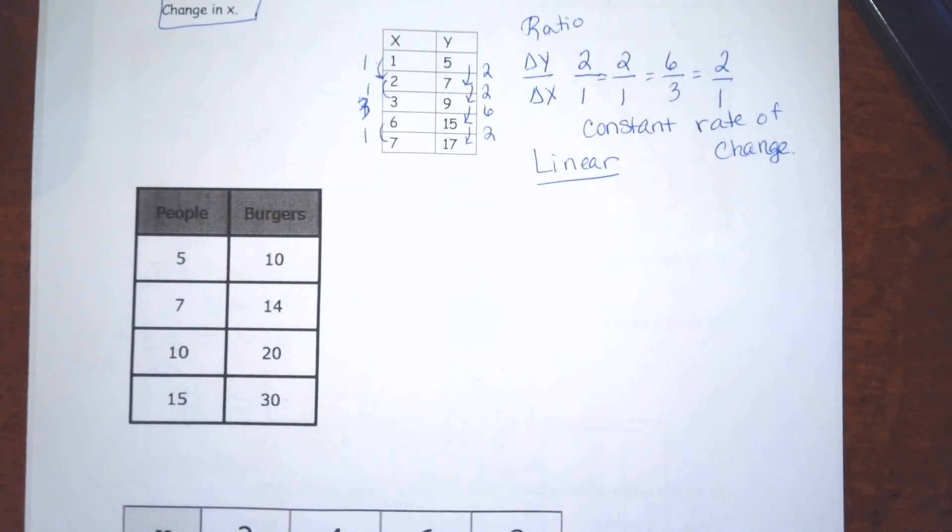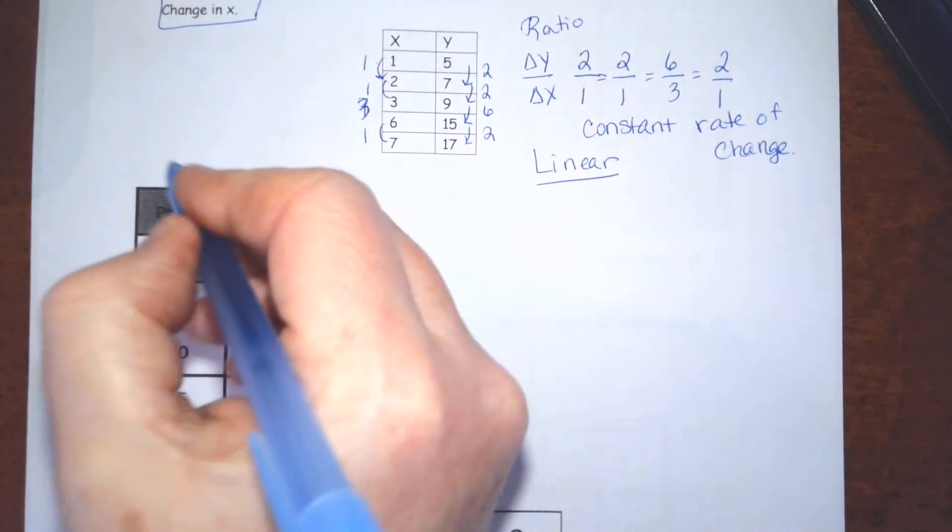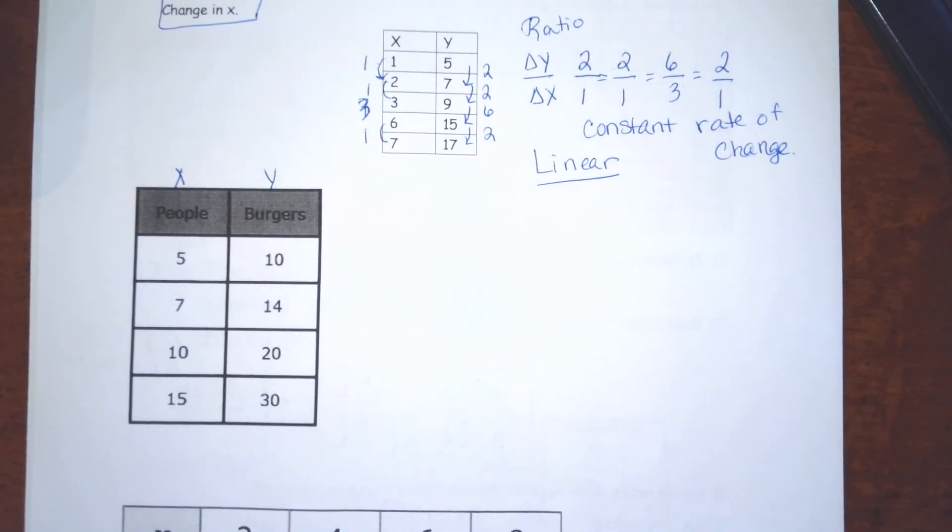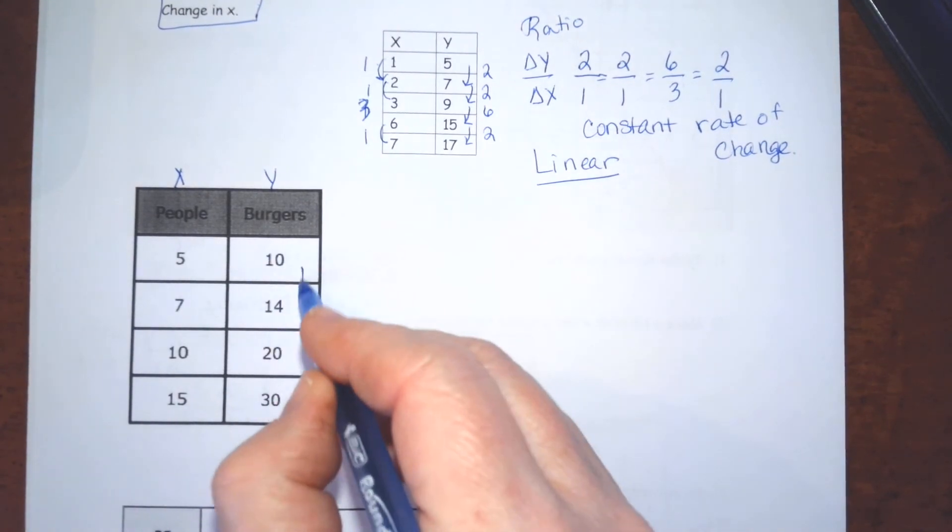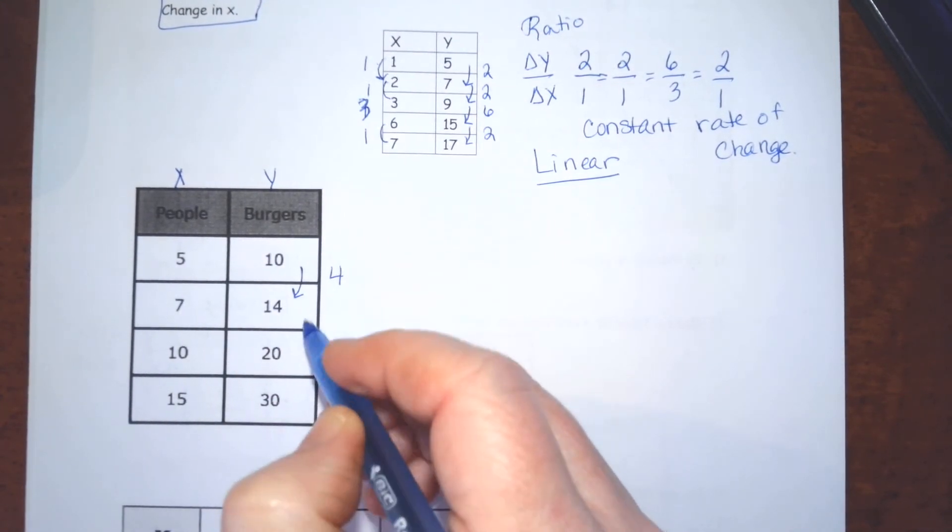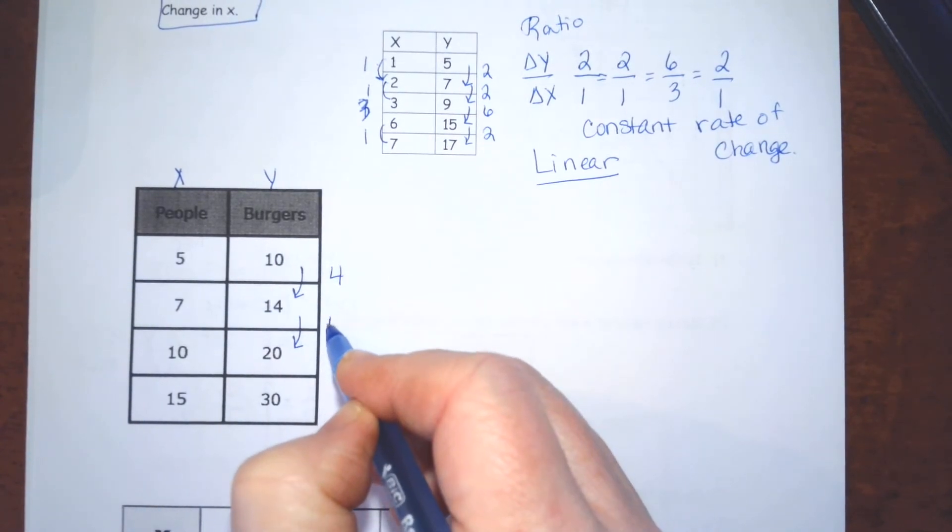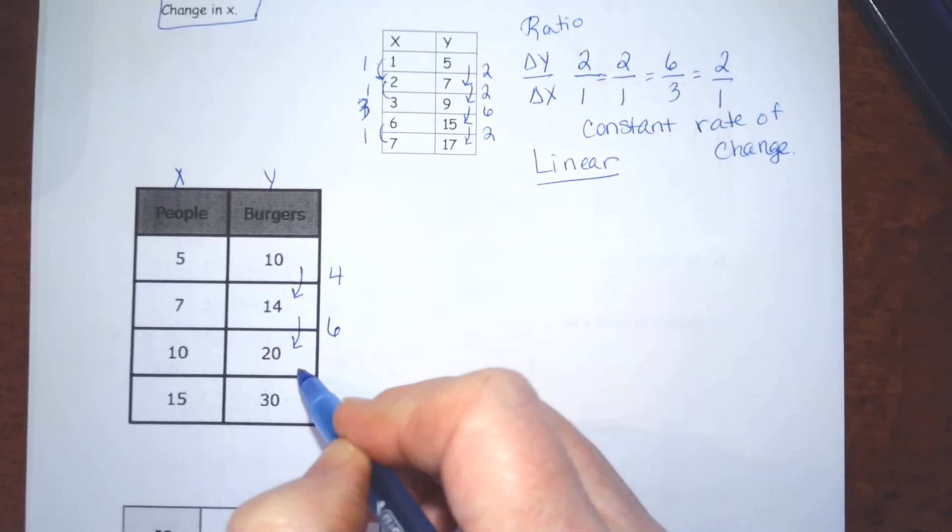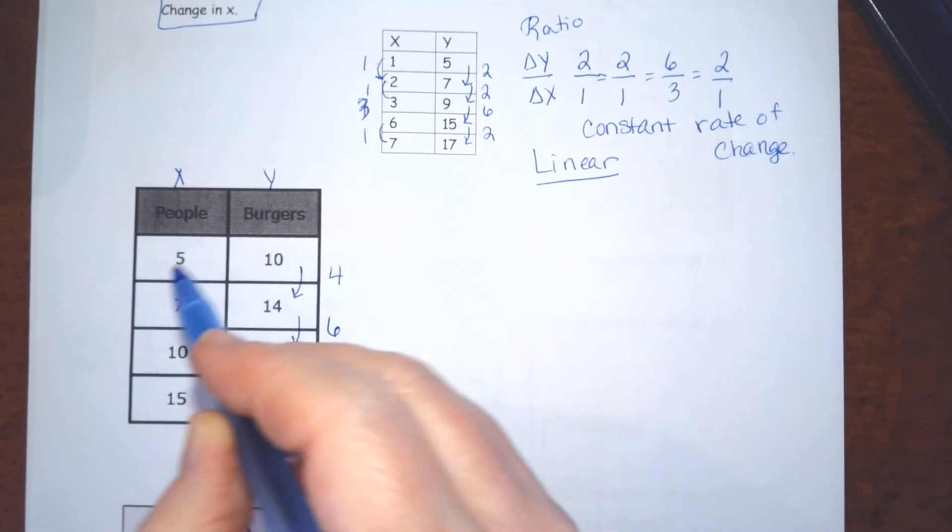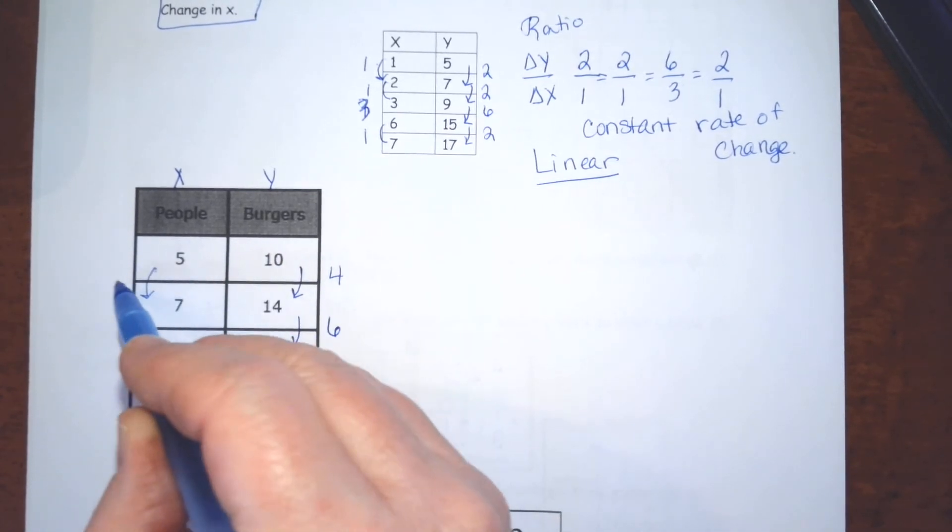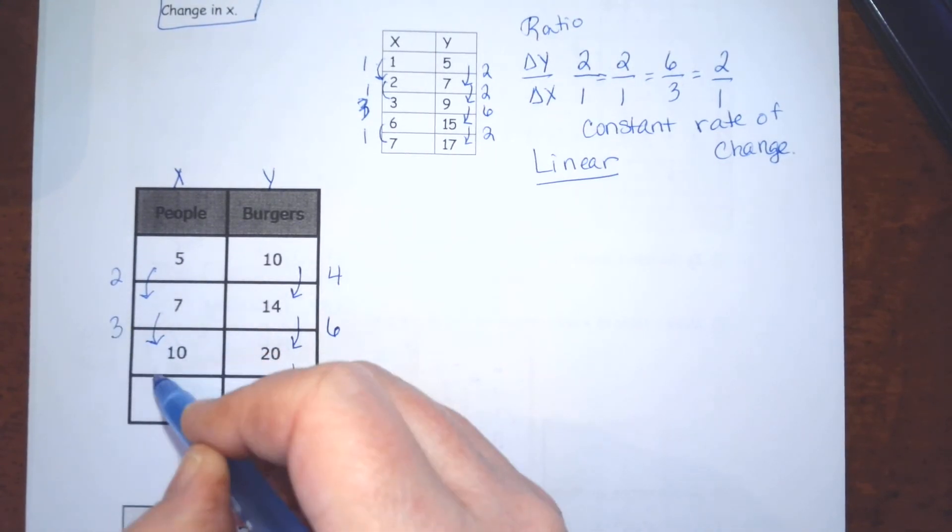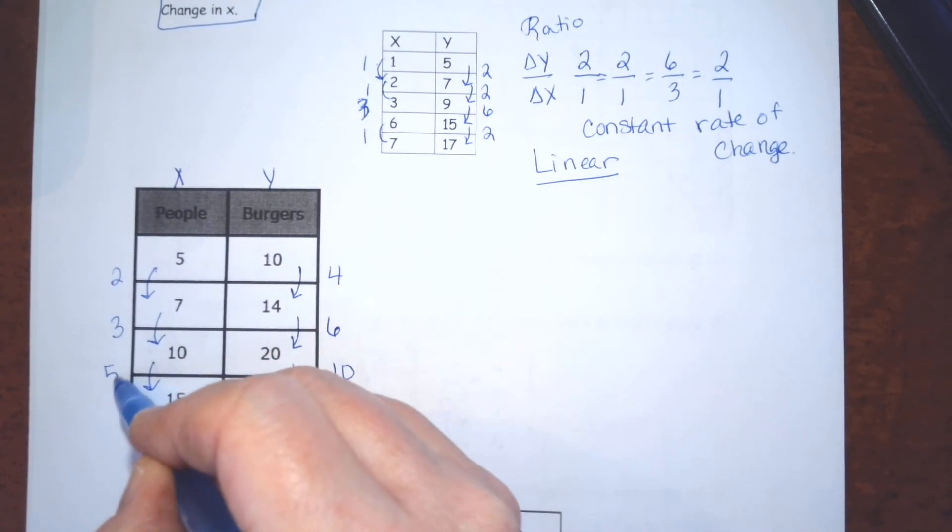Next, table deals with people and burgers. So, these are our x values and these are our y values. And we'll need to find the change in y. From 10 to 14, it went up 4. From 14 to 20, it went up 6. And from 20 to 30, it went up 10. Over here, from 5 to 7, it went up 2. From 7 to 10, it went up 3. And from 10 to 15, it went up 5.